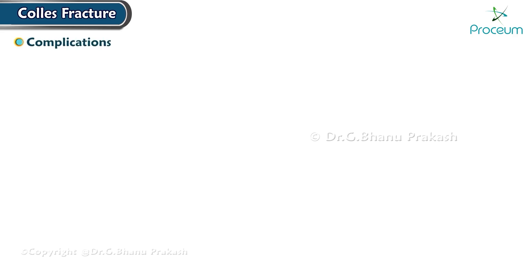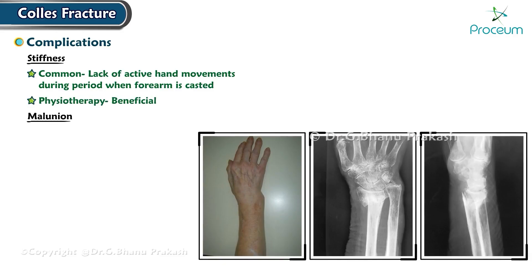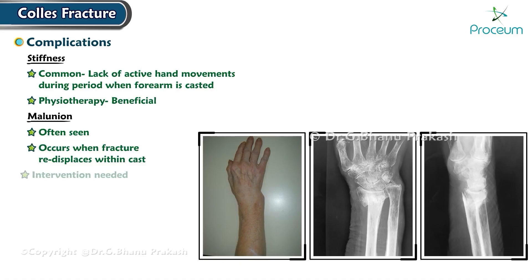Stiffness is a common complication resulting from a lack of active hand movements during the period when the forearm is casted, and physiotherapy is often beneficial in addressing this issue. Malunion is also often seen in Collis fractures, occurring when the fracture re-displaces within the cast; intervention is needed only when it interferes with daily activities.